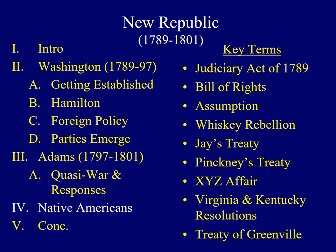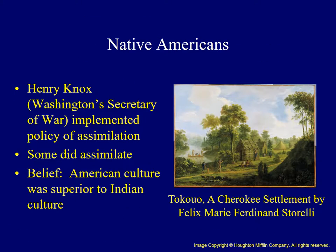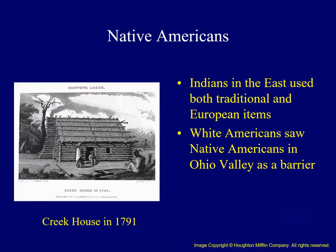The last topic addresses the government's policy toward Native Americans in the era of the early Republic. During Washington's administration, Secretary of War Henry Knox embarked on a policy aimed at assimilating Indians into American society, with attempts made with the Iroquois and Cherokee, among others. However, at the root of these policies was the belief that American culture was superior to that of indigenous peoples. Many white settlers saw the presence of Native Americans on the land in the Ohio Valley as a barrier to American success.